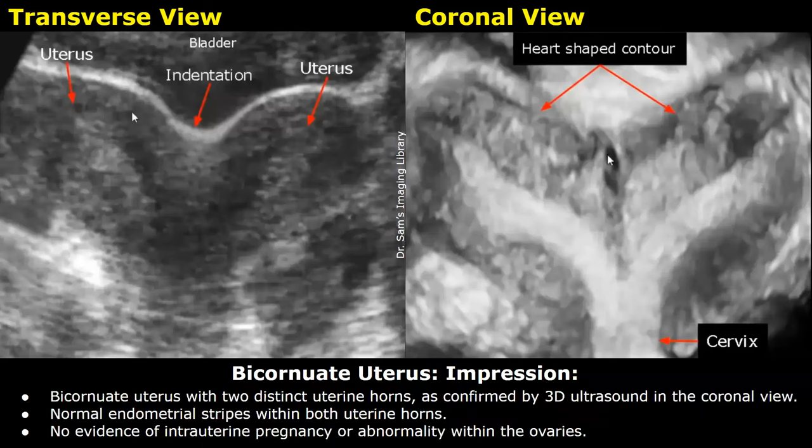This is the impression: bicornuate uterus with two distinct uterine horns, as confirmed by 3D ultrasound in the coronal view. Normal endometrial stripes within both uterine horns. No evidence of intrauterine pregnancy or abnormality within the ovaries.